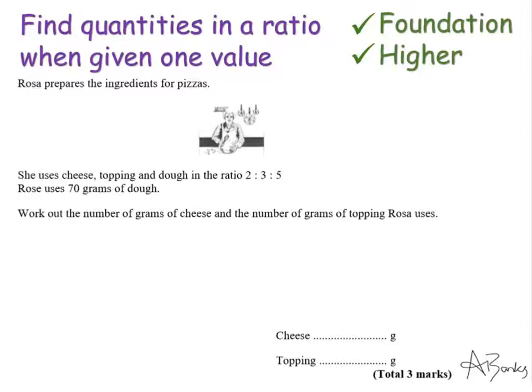The question says Rosa prepares the ingredients for pizzas. She uses cheese, topping, and dough in the ratio 2:3:5. Rosa uses 70 grams of dough. Work out the number of grams of cheese and the number of grams of topping Rosa uses.